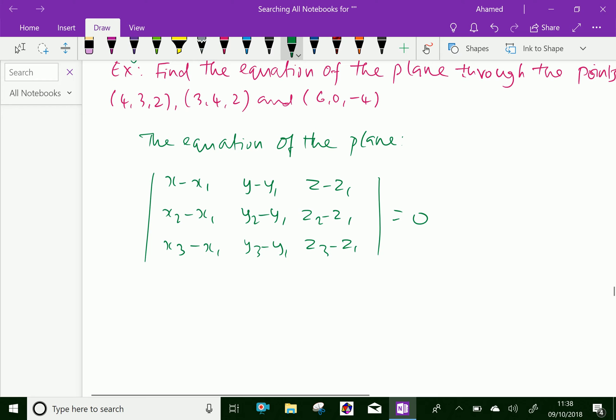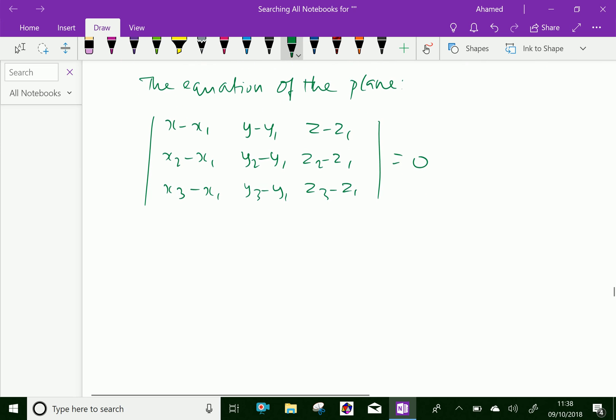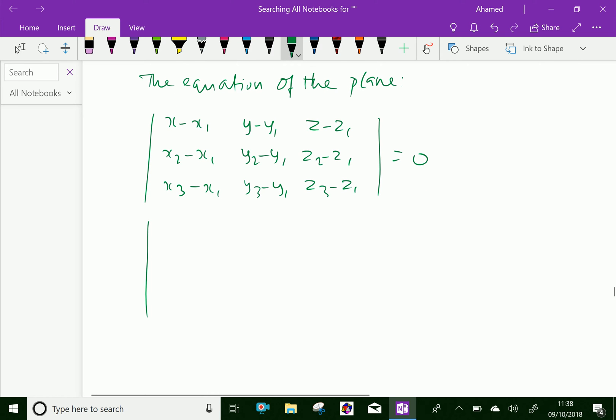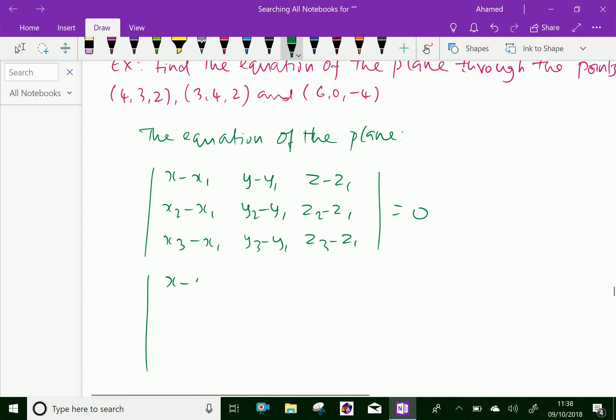Now let us consider the points, the given point in order: x1, y1, z1, x2, y2, z2, and x3, y3, z3. Then substitute the values in the equation, that is x minus 4, and y minus 3, and z minus 2.